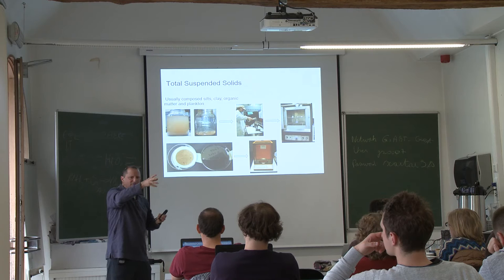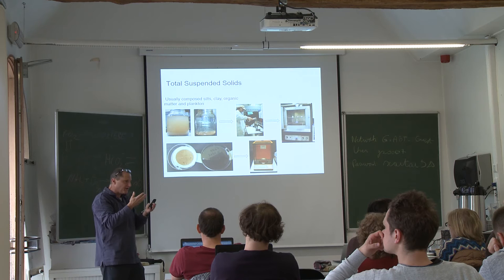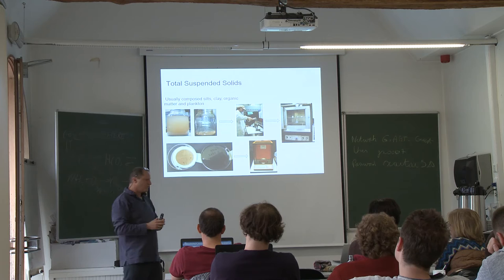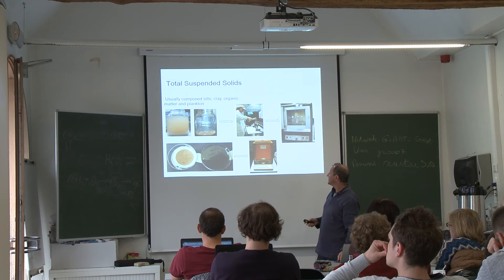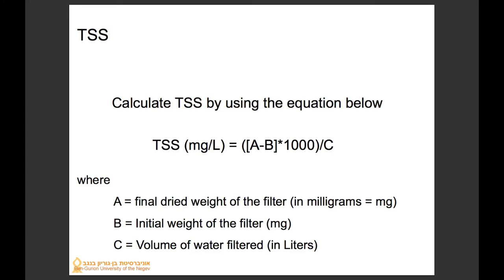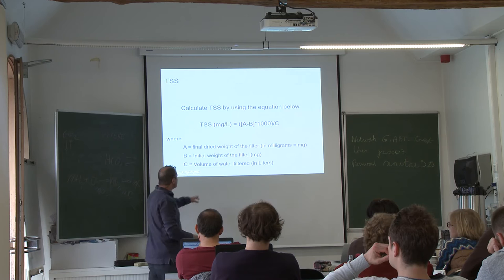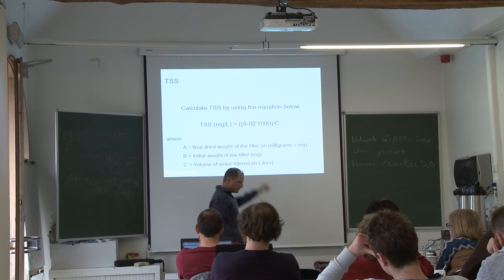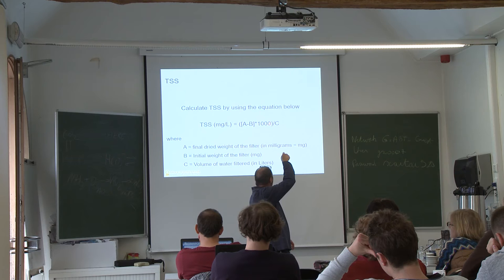The result is expressed as milligrams of solids per liter of water — even if we only filtered 10 mL, we calculate it as if we passed a liter through the system. The TSS formula is: the final dried weight of the filter minus the initial weight of the filter, converted to milligrams per liter. You measure in grams so multiply by 1000 to convert to milligrams.